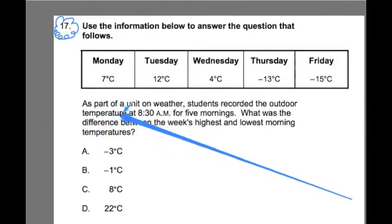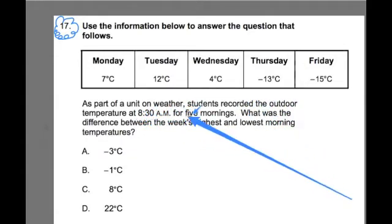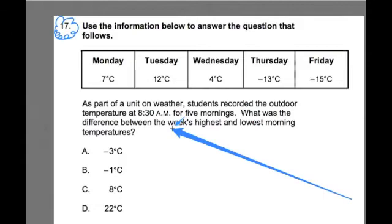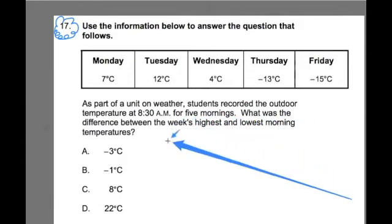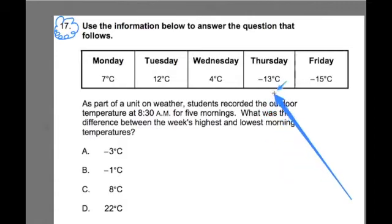Now I'm going to read over the question and hopefully my analysis of the problem will be reinforced in the question itself. So let's take a look and read this over. It says, as part of a unit on weather, students recorded the outdoor temperature at 8:30 a.m. for five mornings. What was the difference between the week's highest and lowest morning temperatures? Wow! We predicted that just by looking at this information here.